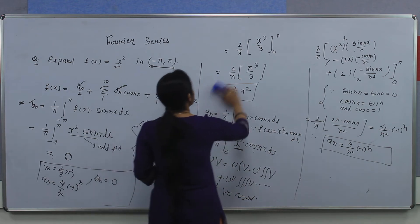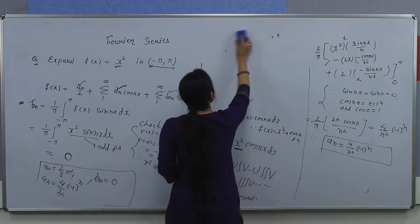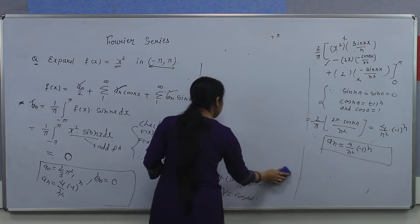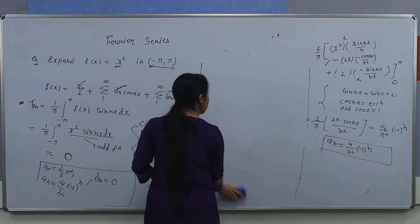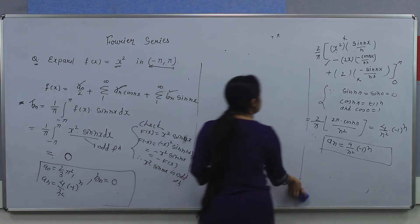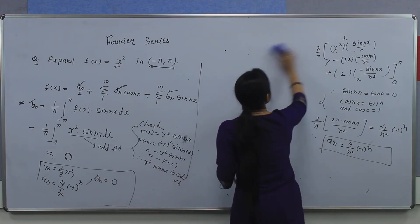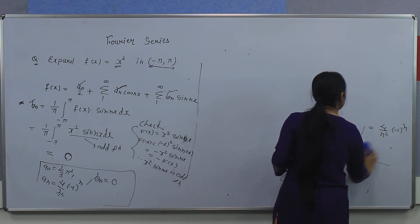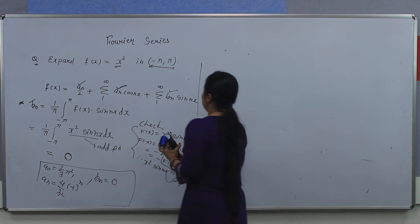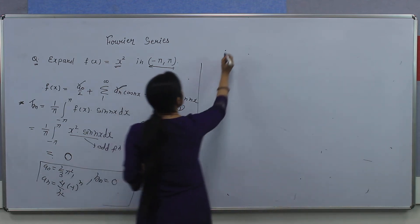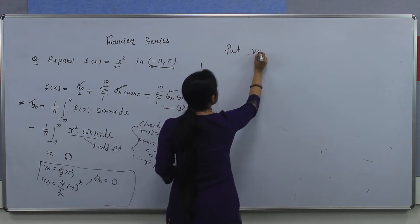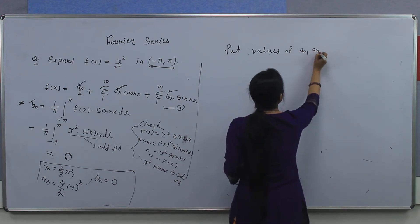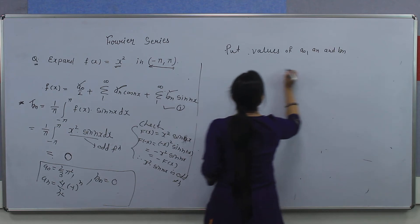So we can form our series. Next, to construct the series. We will also deduce some results from the series. Let it be equation number 1. Now put values of a₀, aₙ, and bₙ in equation 1.